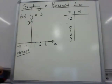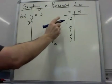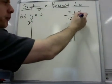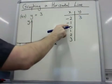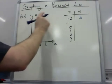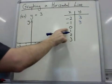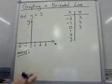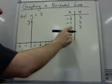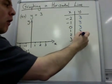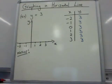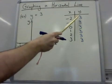When x is minus 2, what's y going to be? y is going to be 3. When x is minus 1, y is 3. When x is 0, y is 3. I hope by now you've noticed a pattern. When x is 1, y is still 3. When x is 2, y is still 3. In fact, any number you pick for x, y is always going to be 3.